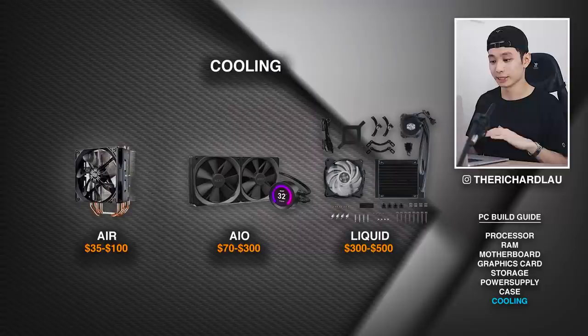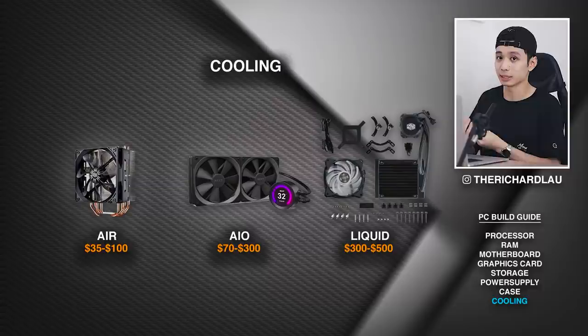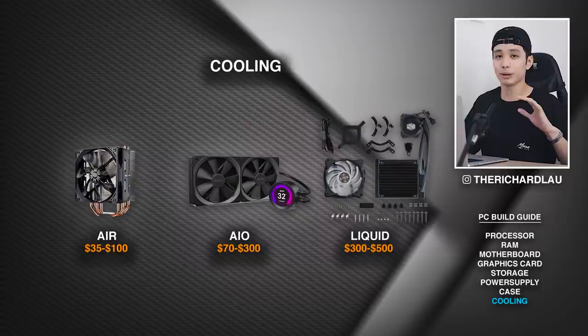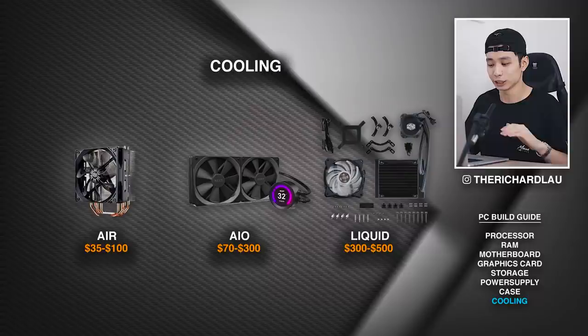Last but definitely not least is cooling. There are three options: air cooling, which uses fans only; an AIO (all-in-one), which is a combination of air and liquid with fans connected to a radiator; and full liquid cooling. If you're doing a simple build, air cooling is more than enough — you can even stick with the stock cooler. If you plan on overclocking, I highly suggest getting an AIO. If you're not doing crazy overclocking, you don't need a liquid-cooled PC.